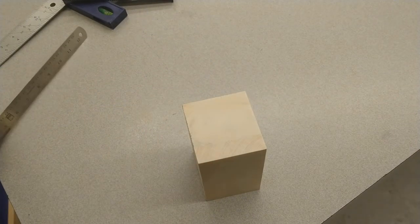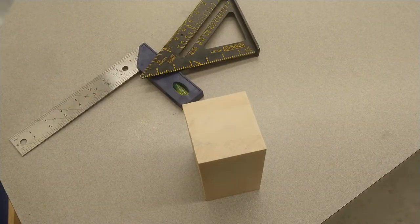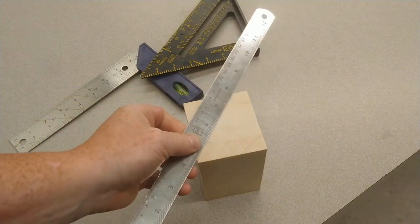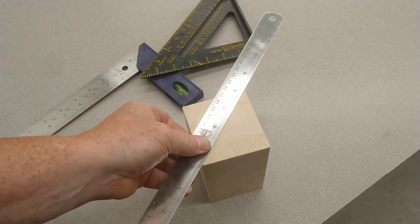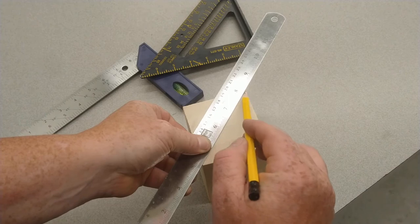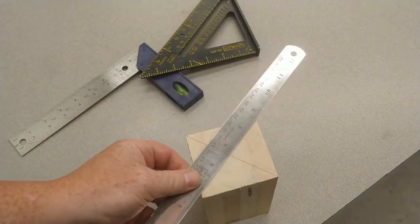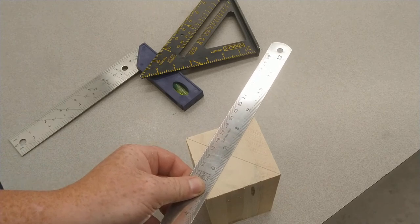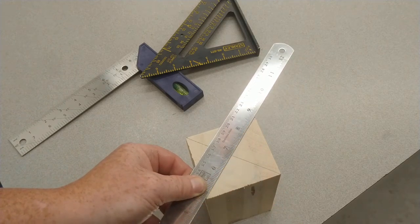Don't draw an X freehand. You're going to take a ruler or some other straight edge, place it on one corner and the corresponding corner, and draw a line. Then come this way, do the exact same thing on the other two corners, and draw a line.